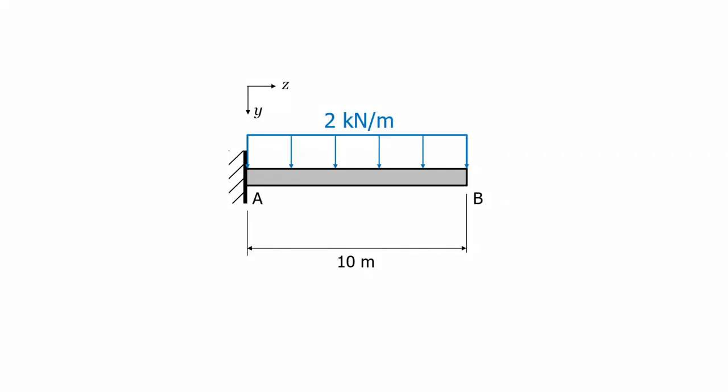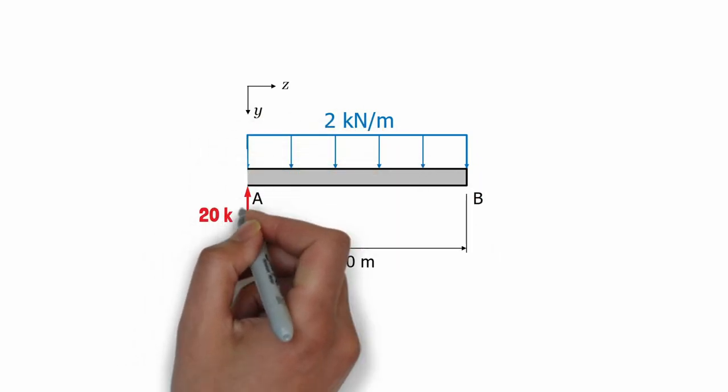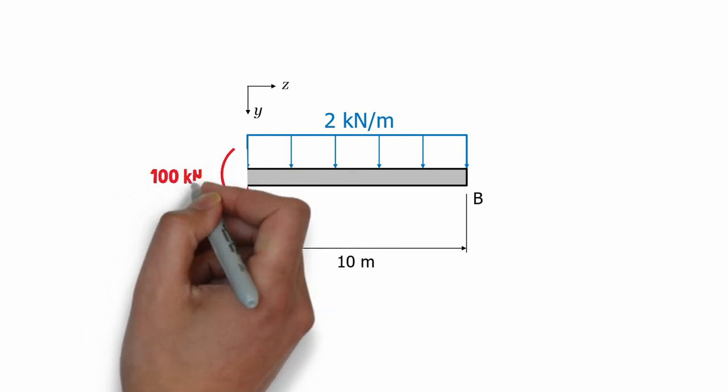Let's see how this would work for our uniformly loaded cantilever beam. We have already drawn the free body diagram and determined the reaction forces acting at the built-in support, so we'll start from there.